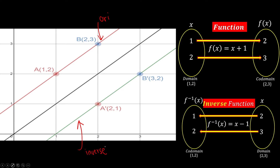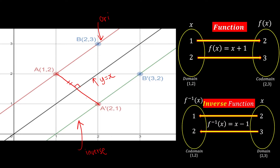Notice what's special about these two graphs. The black line is the line y = x. The original function and the inverse function are basically mirror images of each other — they reflect across the line y = x. You can connect a point and its image, and they will be equidistant from that line, confirming it is a reflection in the line y = x.